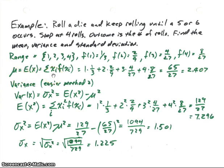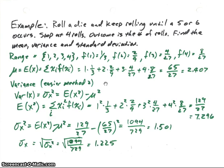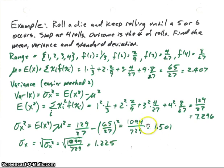For the mean, we sum x values times their distributions: one times one-third, plus two times two-ninths, and so on. We get sixty-five twenty-sevenths, or about 2.407. For the variance, I'll use the easier method: expected value of x squared minus mu squared. The expected value of x squared — squaring each value times its distribution — gives 129 over 27. Then we subtract the mean squared to get 1094 over 729. The standard deviation is then the square root of that number.